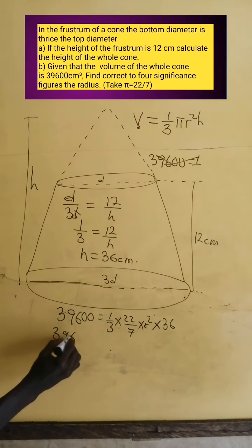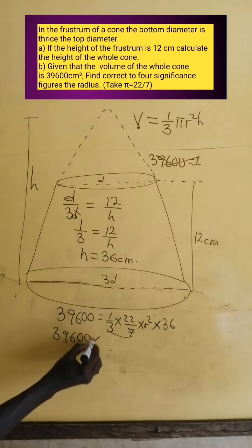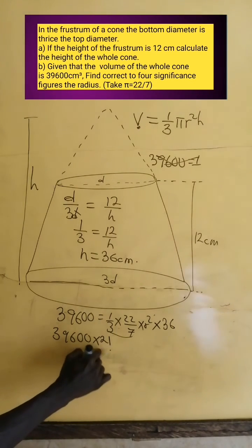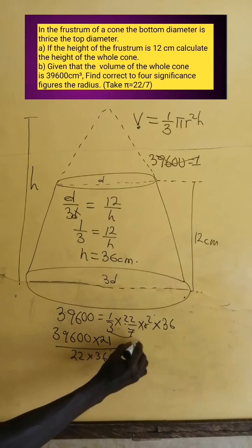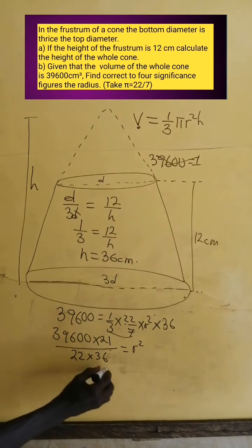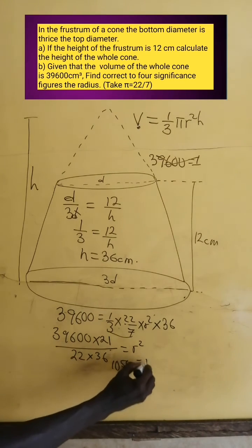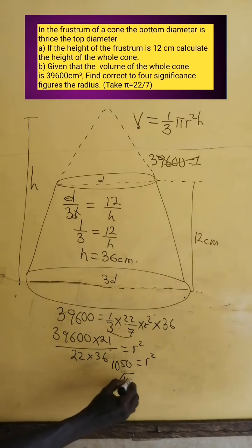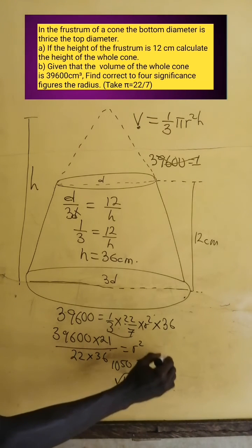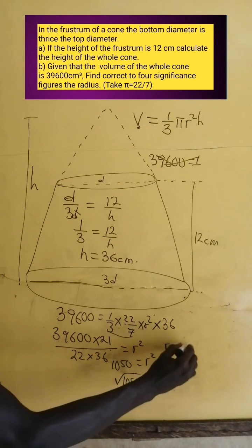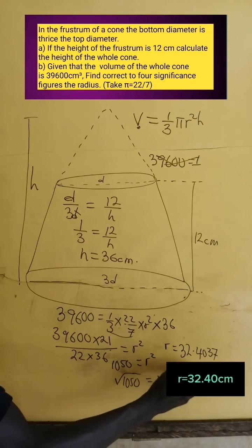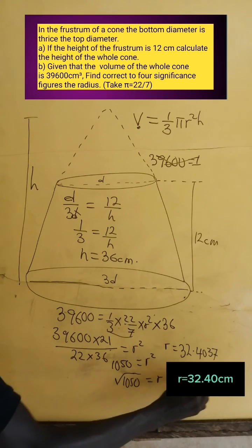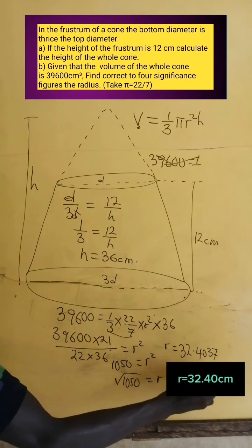We have 39,600 times 3 times 7, that is 21, all divided by 22 times 36 equals R squared. If we simplify this, we have 1050 equals R squared. Taking square root of both sides, we have R equals square root of 1050, which gives R equals 32.4037, or 32.40 centimeters to four significant figures.